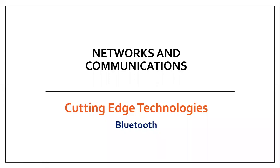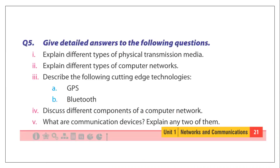Assalamu alaikum students. Today we will discuss Year Number One Networks and Communications topic: cutting edge technologies. In the last lectures we discussed cutting edge technologies and the types — Bluetooth, satellite communication, cellular communication, and GPS. Today we will discuss Bluetooth. This topic answers exercise question number five, part three: describe the following cutting edge technologies, part B — Bluetooth.